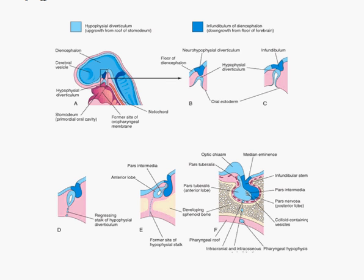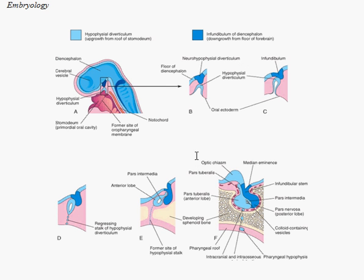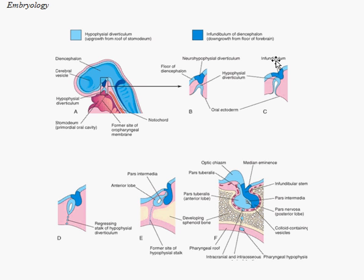The anterior and posterior pituitary are completely different because of their embryology. Imagine a fetus with the cranial side around the head and the caudal side at the tail. The stomatodeum, which is the future mouth, is visible here. The anterior pituitary is made from oral ectoderm — it's a superior upgrowth. Conversely, there is a downgrowth of the diencephalon, the infundibulum, or neuroectoderm.